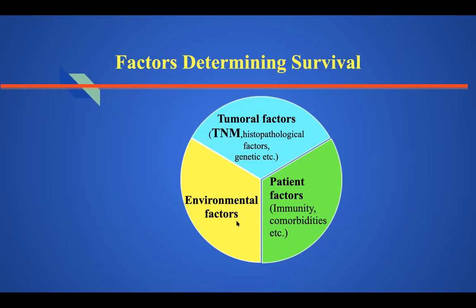As clinicians we cannot fully understand patient and environmental factors reproducibly. We can detect T (the size of the tumor), nodal status, and metastasis. It is important to remember there are other factors as well. Stage is a function of three parameters: T for tumor, N for nodal status, M for metastasis. As surgeons, we must construct the stage to understand if the patient is operable. We don't operate all patients — only about one out of seven can benefit from surgical resection.